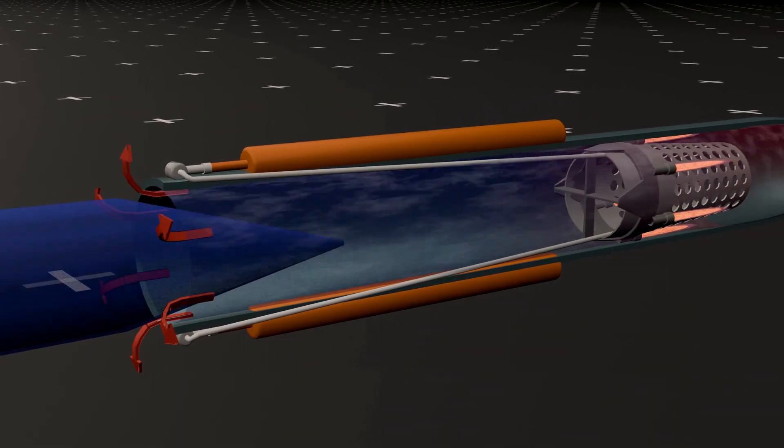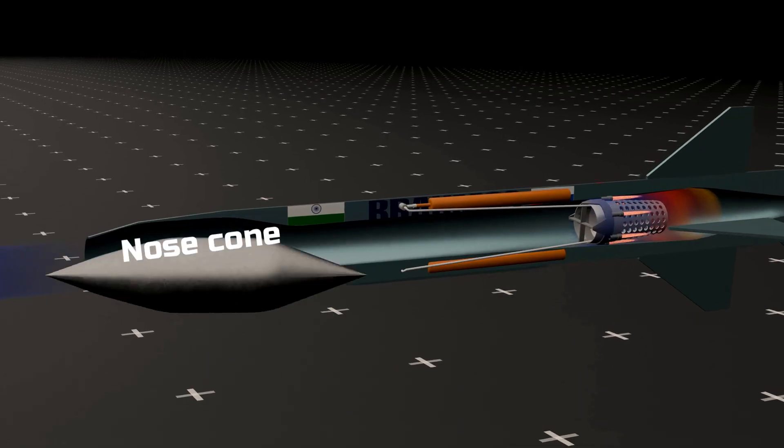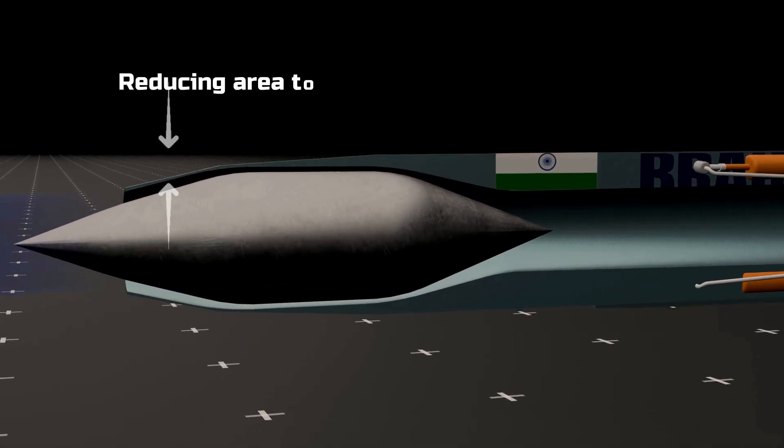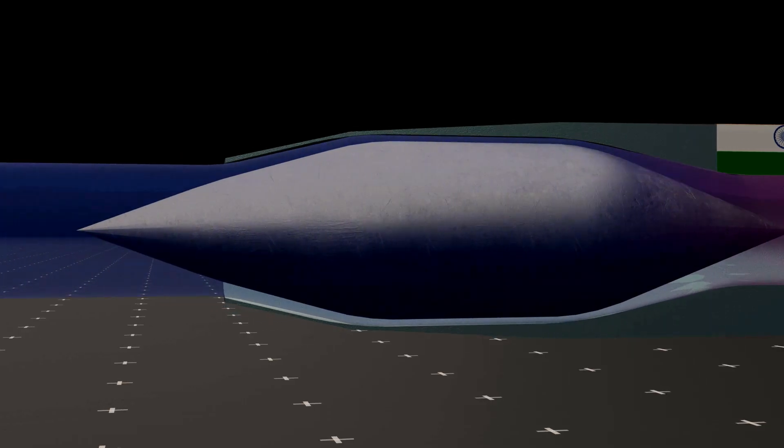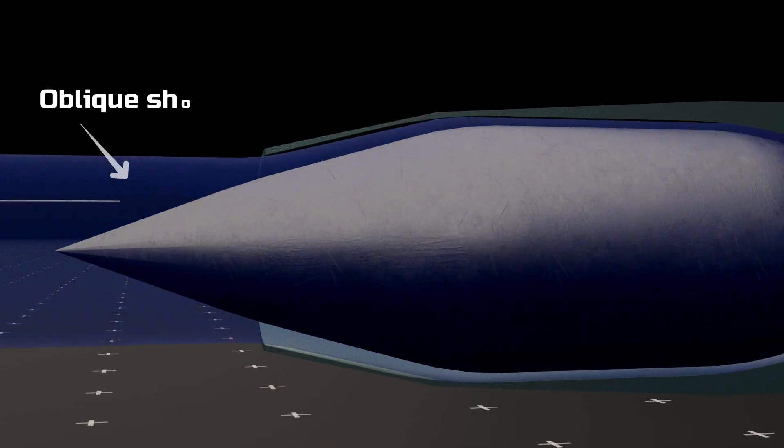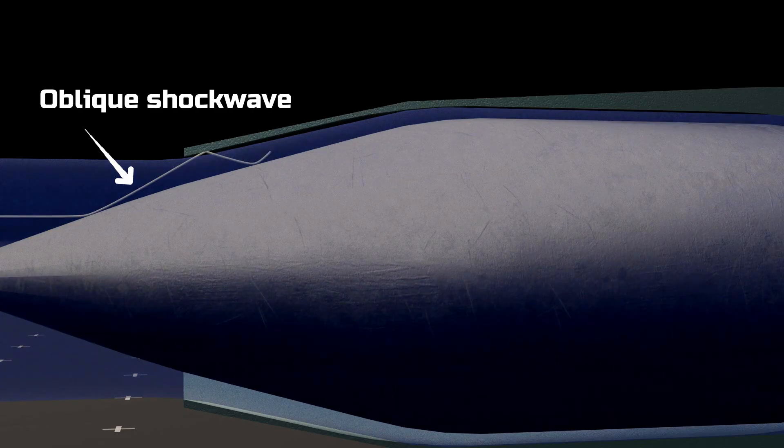To overcome this, scientists redesigned the missile's nose cone. The new design compresses the incoming air more efficiently, using oblique shock waves generated as the air strikes the nose and body surfaces. These oblique shock waves increase pressure without causing air to spill out, ensuring a steady supply of high-pressure air to the combustion chamber.